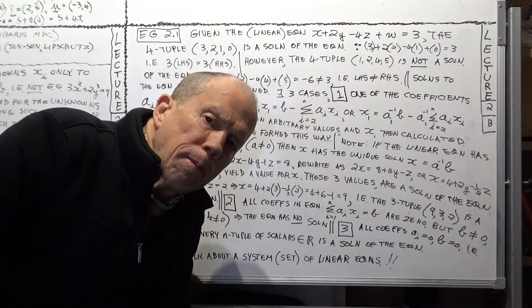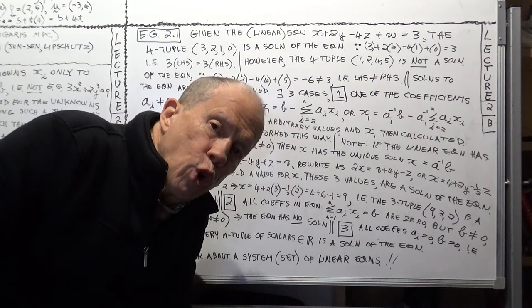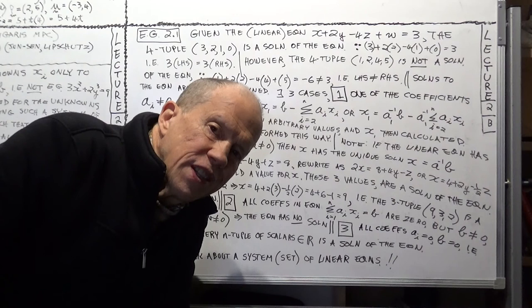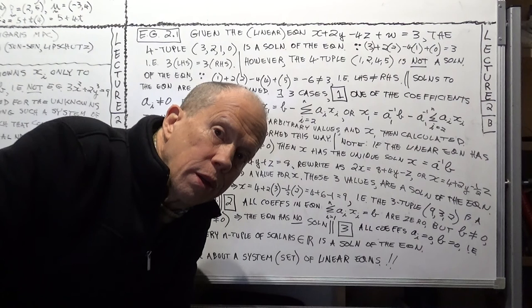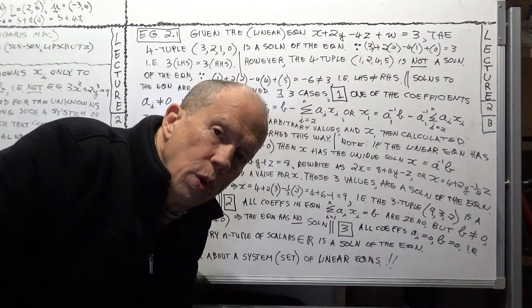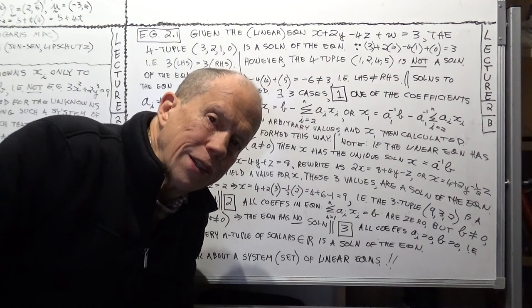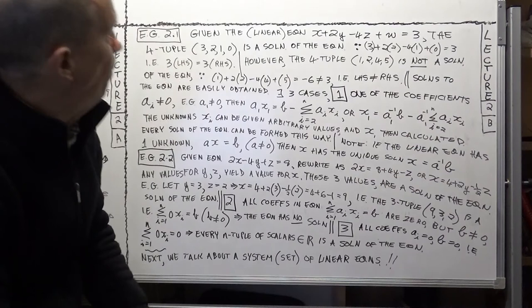This is Daguerros MPC — Math, Physics, Computing — 130 plus Masters and PhD level courses on Pure Mathematics and Mathematical Physics. This is course number 4, MPC 4, on Linear Algebra, which is a junior and senior level course. This is Lecture 2 on the theme of Linear Equations, Session B.